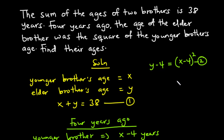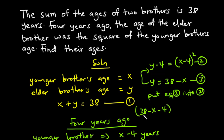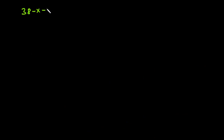Now we are going to make one variable the subject from one of the two equations and substitute into the other. From equation one, let's make y the subject: y equals 38 minus x. Let's call this equation three. We will now substitute equation three into equation two, giving us 38 minus x minus four equals x minus four, all squared.